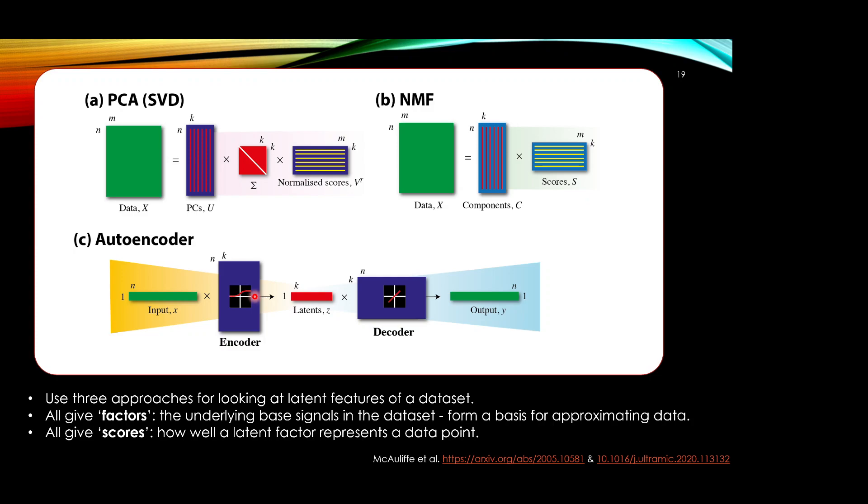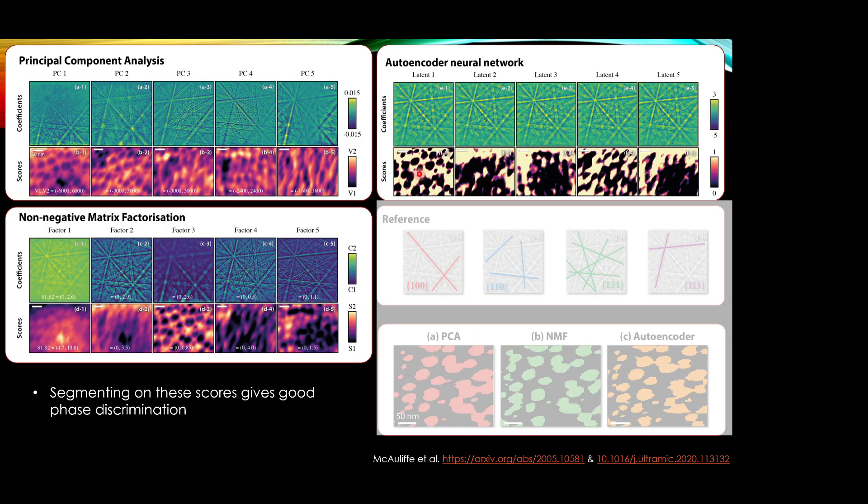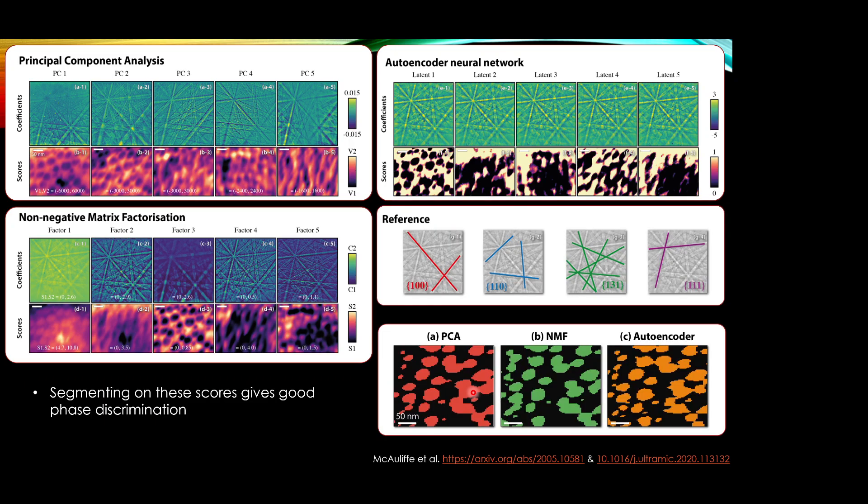If we look at the principal component analysis results, the top five components start to show you very significant variations in the spatial maps, the scores of those components. We see specific bands and structures appearing throughout our microstructure. This is very similarly seen, although the rotation of the components is subtly different. For instance, we see beautifully the island structure coming out in factor three of the NMF. In the autoencoder neural network, similarly, we get that beautiful structure reproduced very strongly in latent one. We can see that we can then image by looking at specific components or segmentations. We can extract the gamma gamma prime structure quite nicely from our diffraction based information.